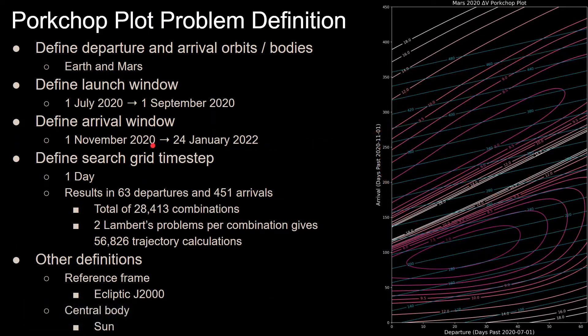Some other definitions: you have to define the reference frame in which you are getting these orbits or trajectories, basically the ephemeris data in what reference frame you are referring to. You need the central body because the gravitational parameter of the central body is part of the Lambert's problem calculation.